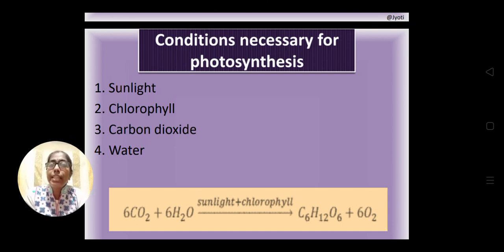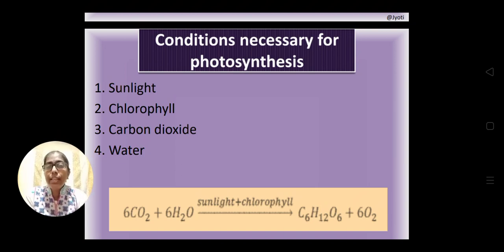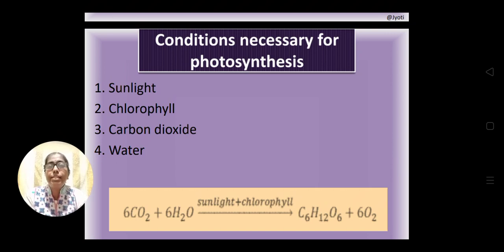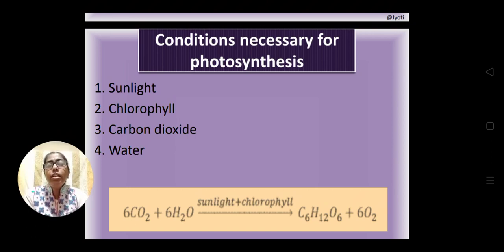The factors required for photosynthesis: the name itself indicates — 'photo' means light, 'synthesis' means making — so making food in the presence of light. Sunlight is the most important factor. The next is chlorophyll, which are the green pigments present in the chloroplast of plant cells. Carbon dioxide is also required, which the plant receives from the atmosphere.